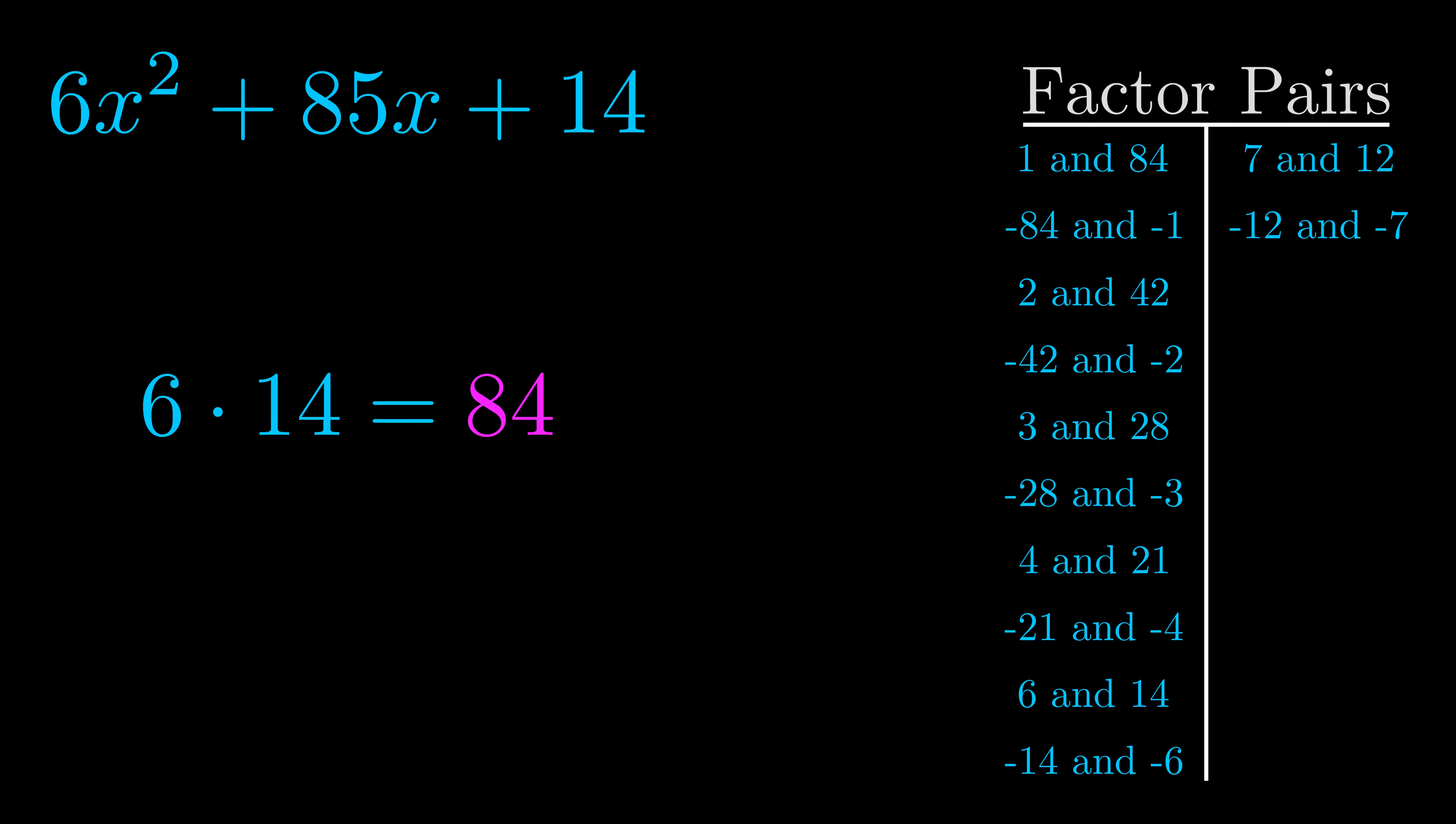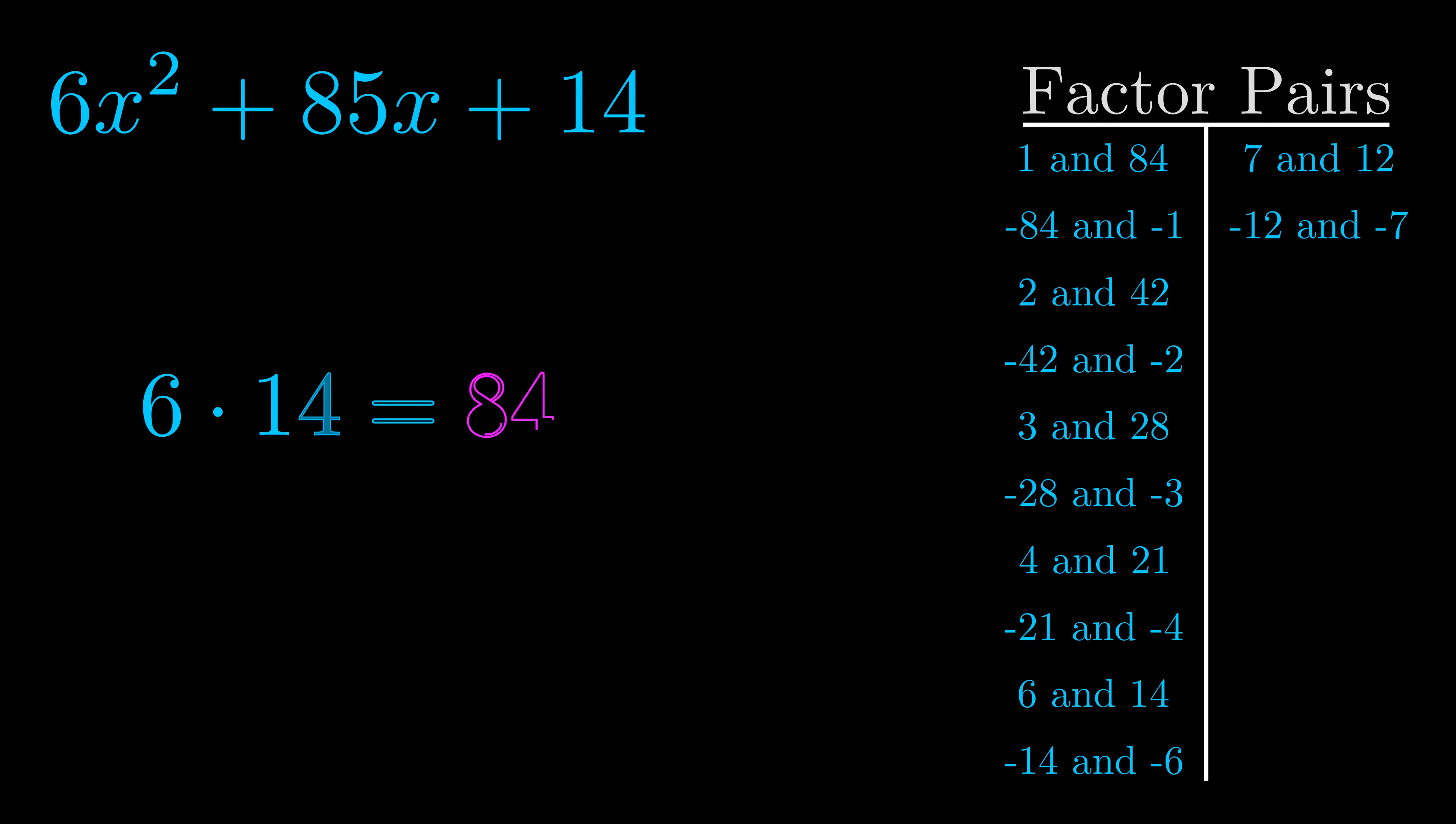Now once you have these factor pairs the goal is to find which of these pairs adds to the b value. The b value is the coefficient on the x term. That's the middle term, the one that we haven't done anything with yet. And really this is the only factor pair that we need.